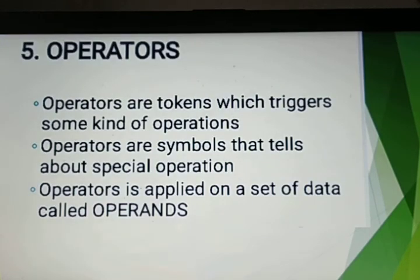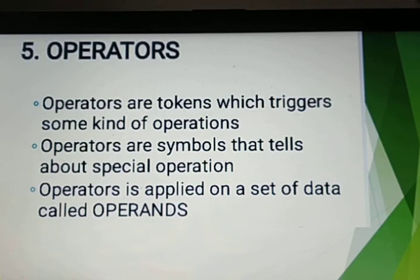The fifth token is operators. Operators are the last tokens, which trigger some kind of operation on a variable. Operators are symbols applied on a set of data, and this data is known as an operand. For example, in 5 plus 2, plus is the operator, and 5 and 2 are the operands.